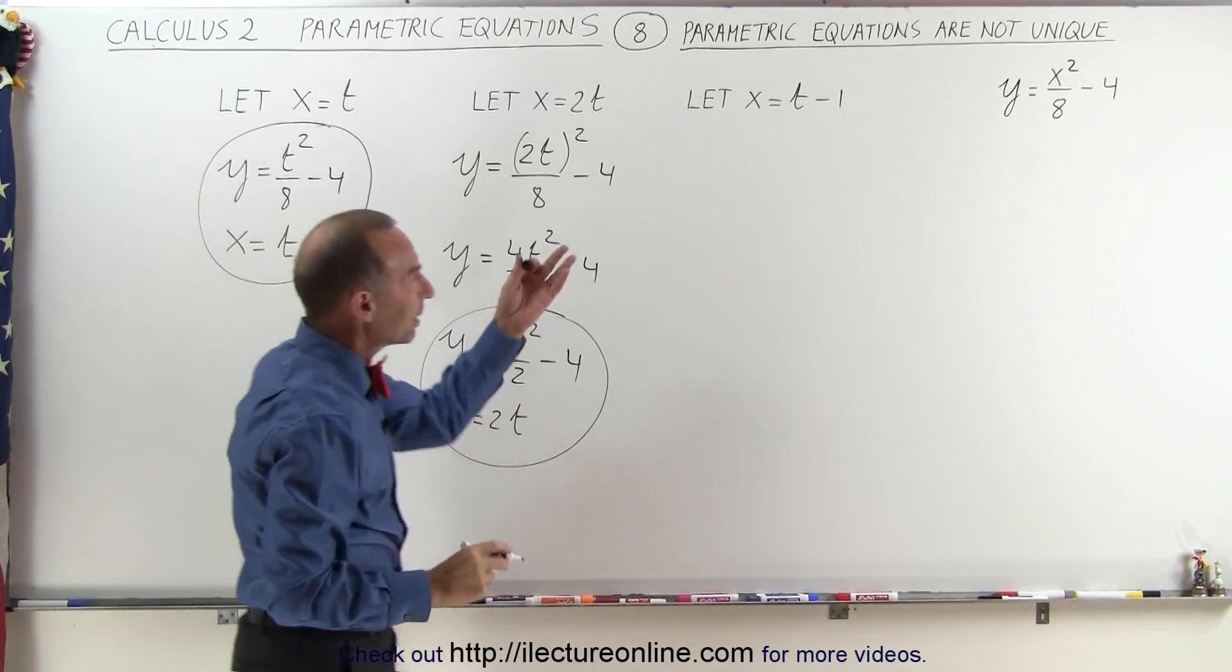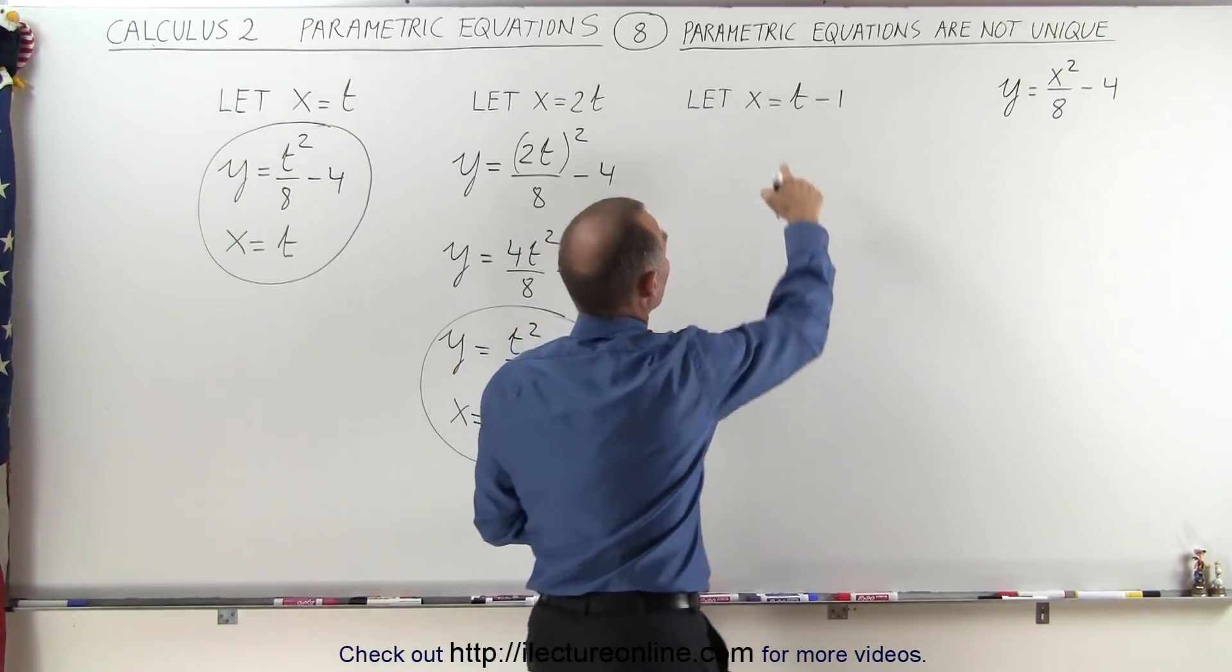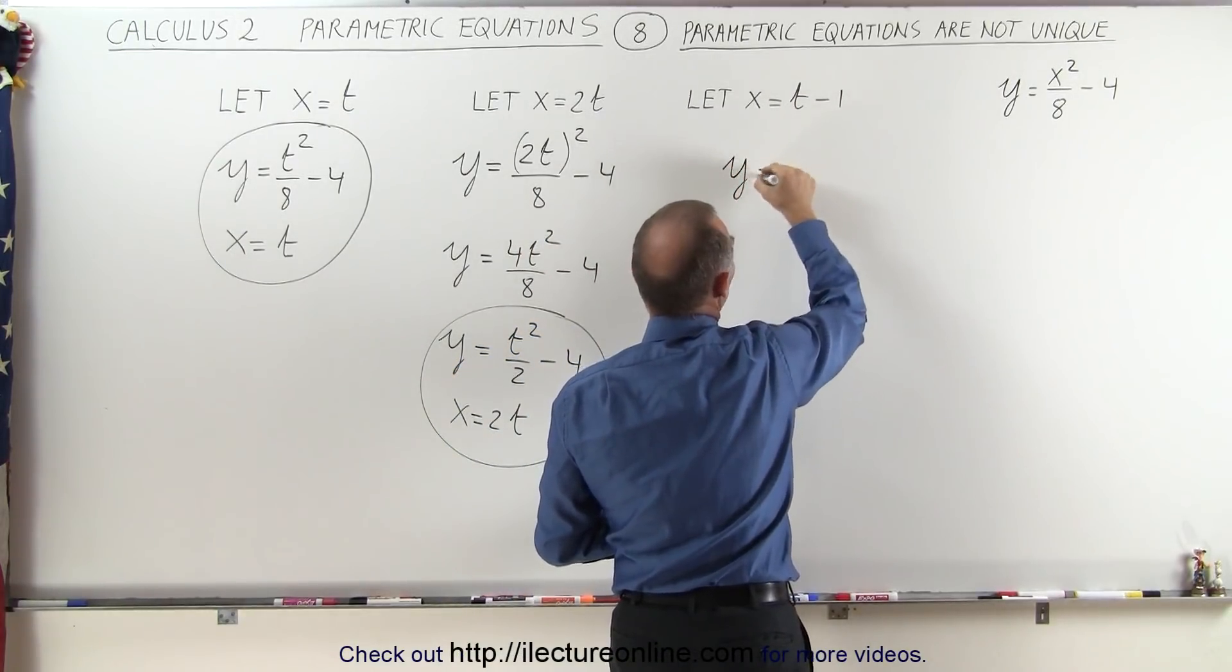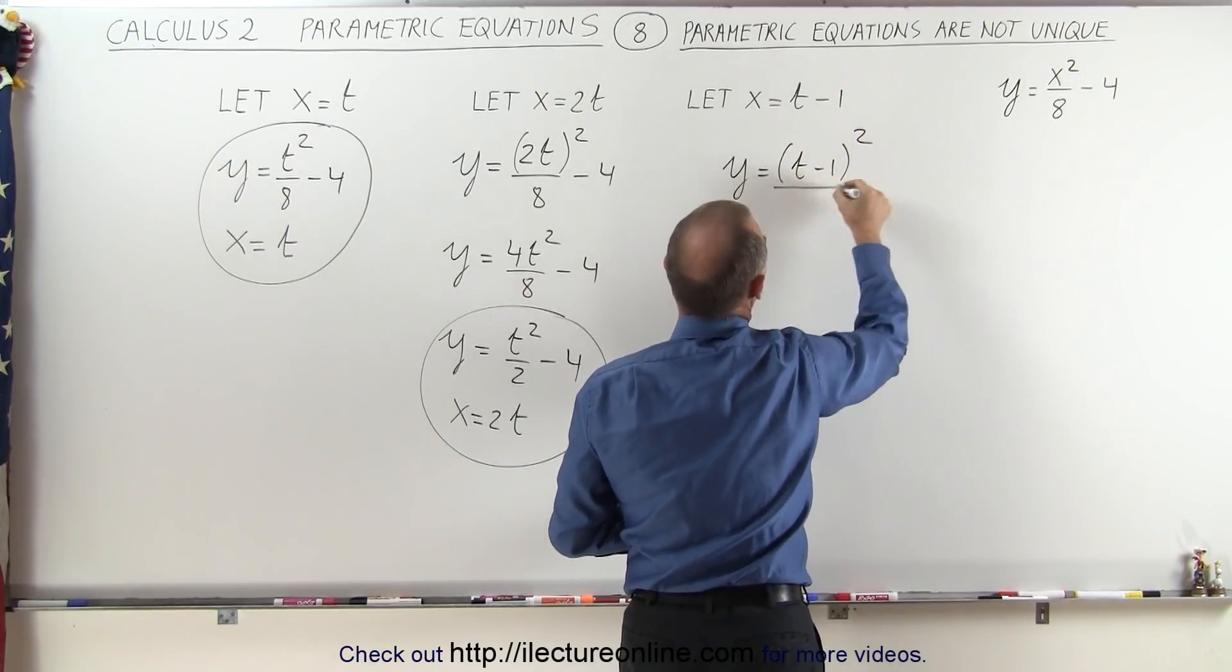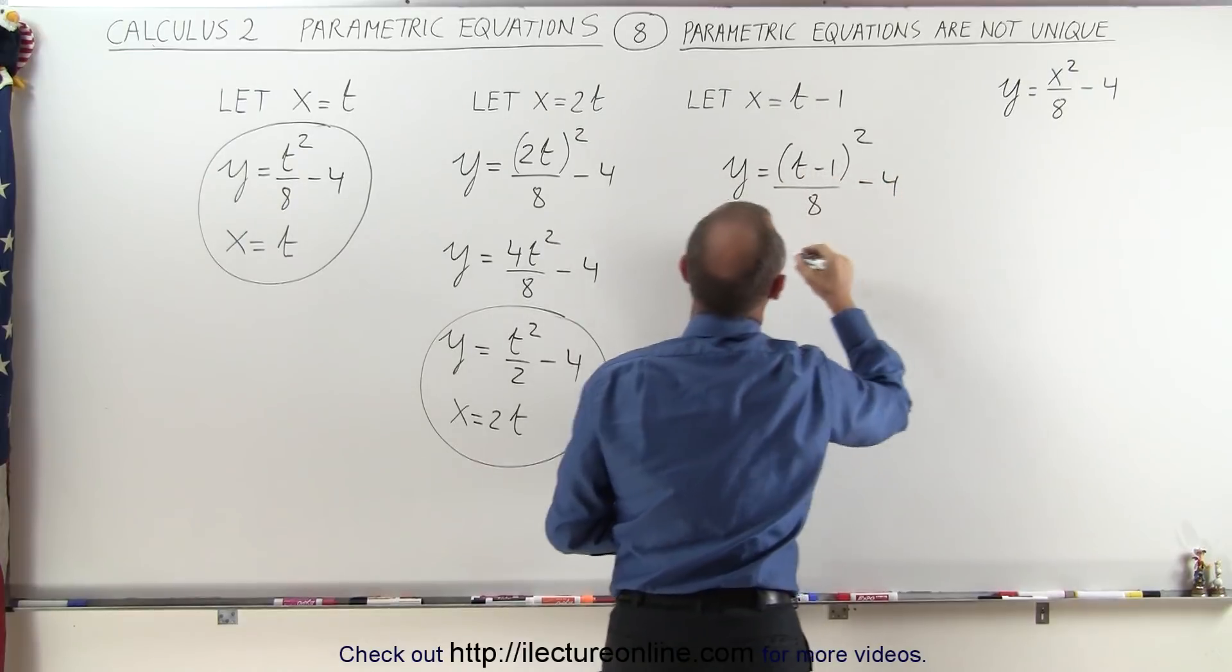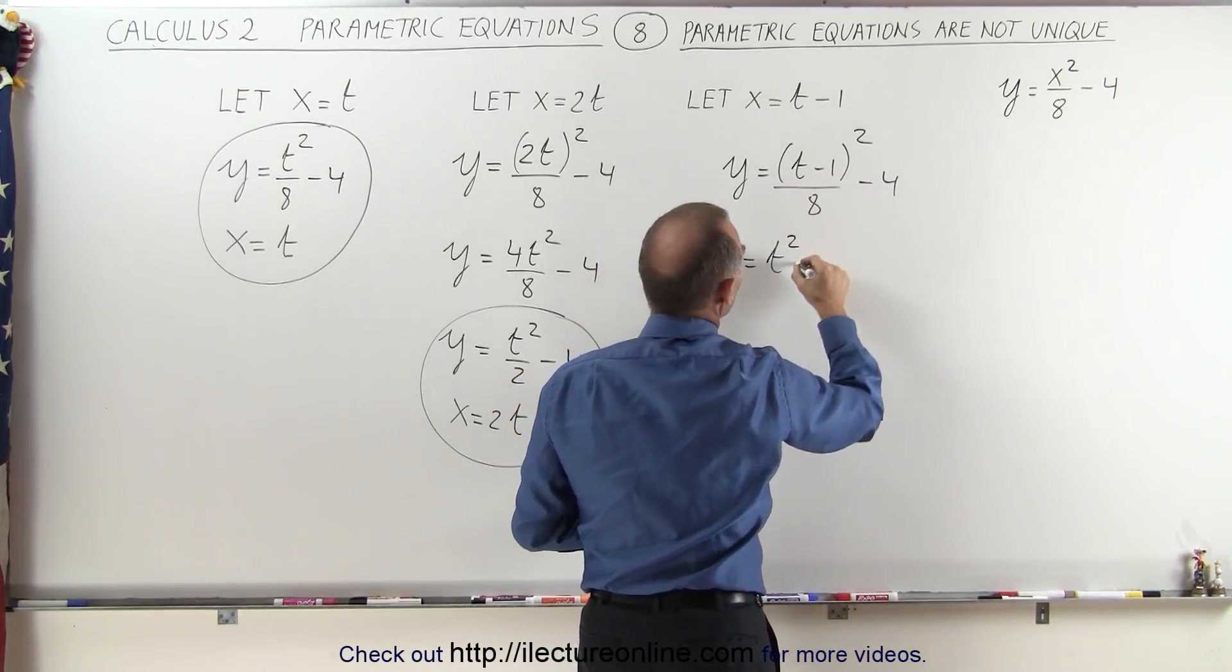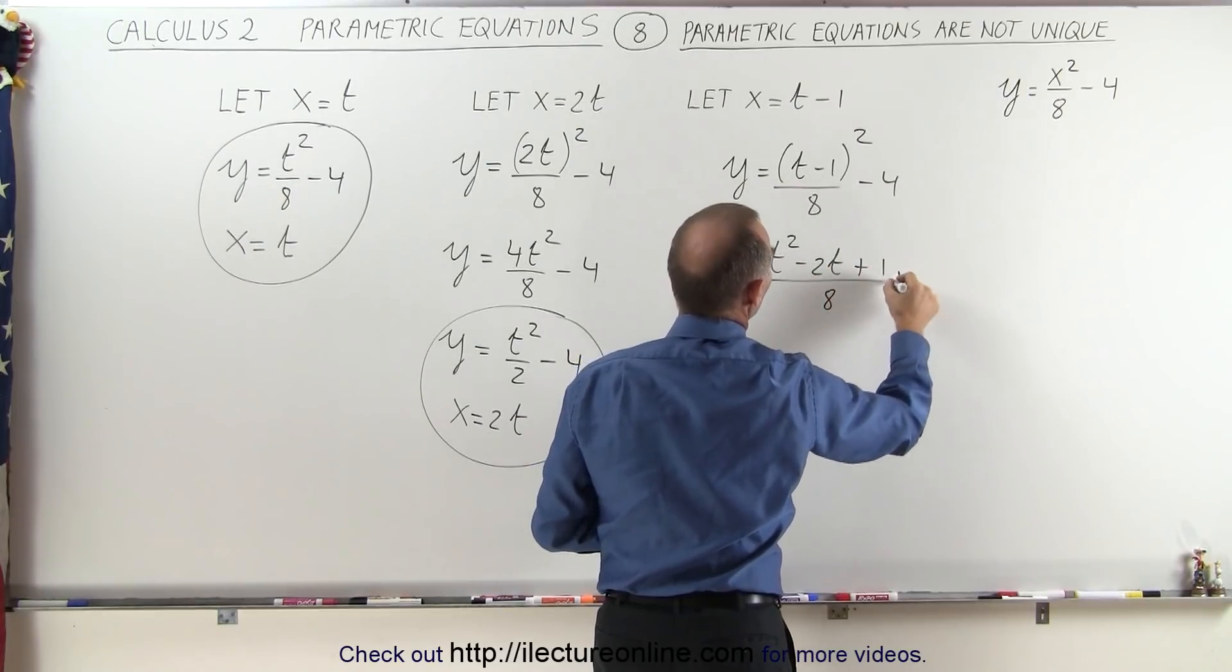To show you that you can start with any function of t for the value of x, when we plug that in, we get y = (t - 1)²/8 - 4. This becomes y = (t² - 2t + 1)/8 - 4.